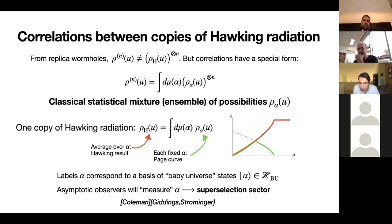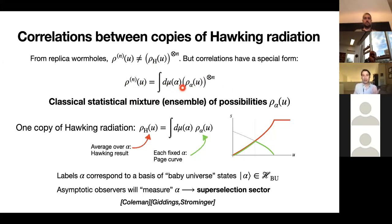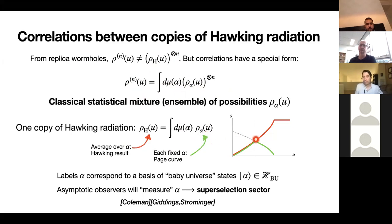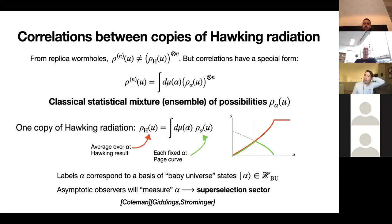Coming to the end: the important thing we've arrived at is that there are correlations between different copies of Hawking radiation, but they are very special correlations — they have the form of a classical mixture of possibilities labeled by these auxiliary alpha parameters. One copy of Hawking radiation is some statistical mixture of many possibilities rho_alpha, where rho_alpha follows the Page curve, but the mixture doesn't — it follows the Hawking curve. These correspond to different possible states of the baby universes that we've traced out — basically the idea of Coleman and Giddings-Strominger: wormholes induce superselection sectors.